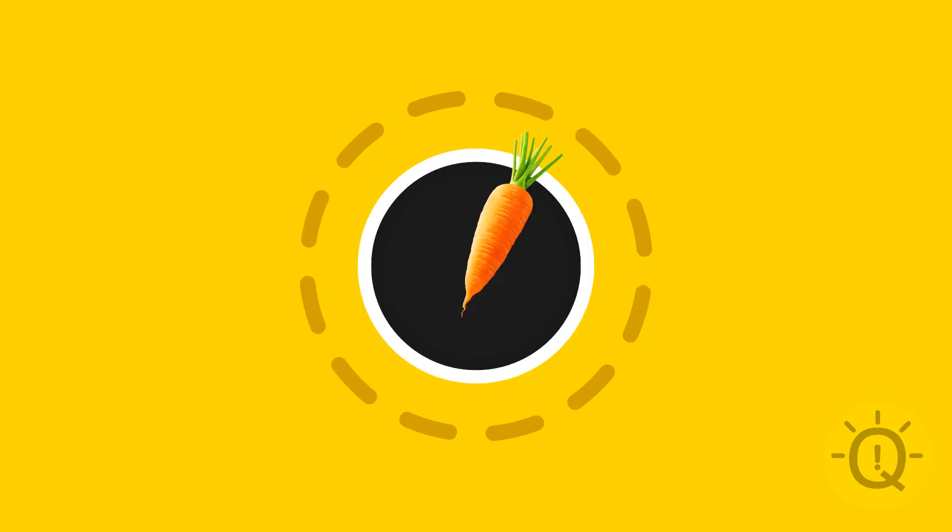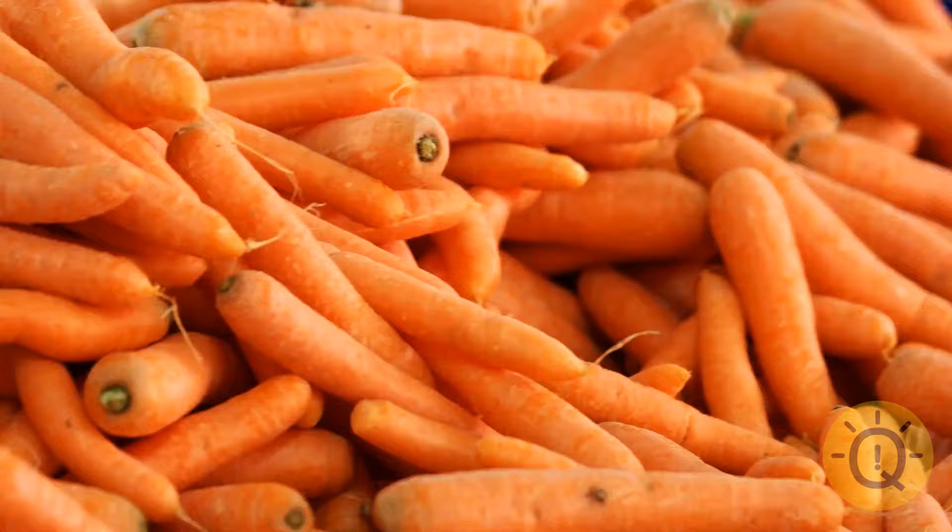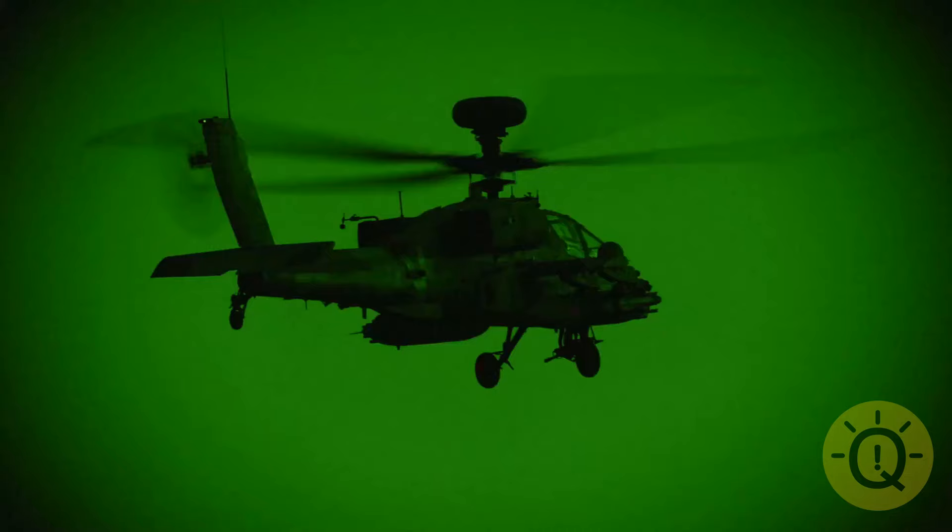Carrots can help you see in the dark. Myth. While carrots are full of vitamin A, which helps maintain eyesight, you won't get night vision. In the 1940s, British Air Forces invented a new radar. And to keep it secret, they told everyone it was carrots that helped them see at nighttime.